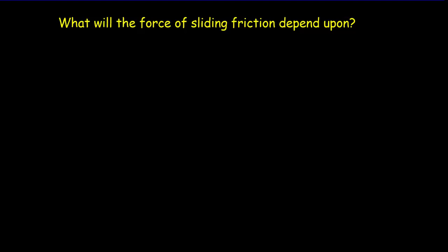The first question you should ask is: what does the force of sliding friction depend on? Let's make a couple of likely guesses. How about speed? The faster you pull a block, will that make more friction? It turns out sliding friction isn't like fluid friction — speed doesn't have an effect, at least to a first-order approximation. Speed does not have an effect.